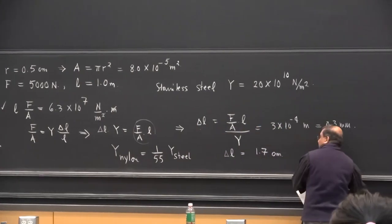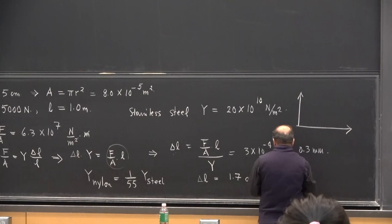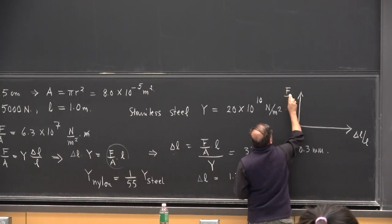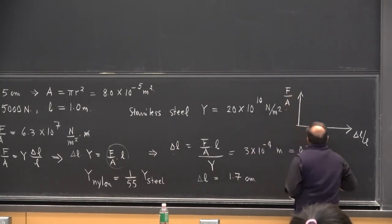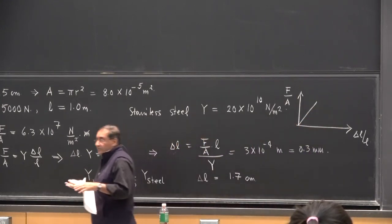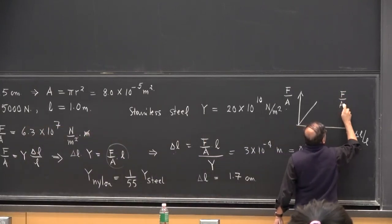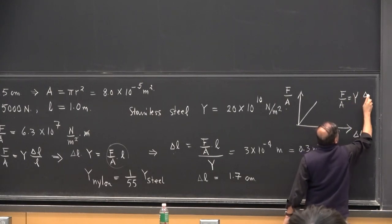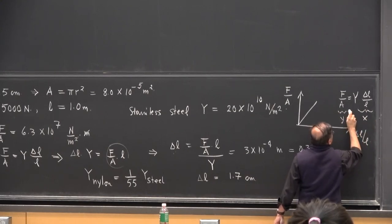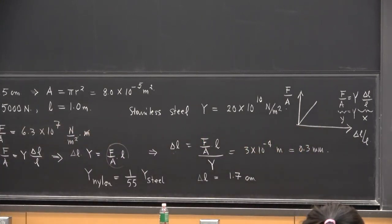These relations all have their regime of validity. If I were to plot stress and strain — this is the strain delta L over L, and this is the stress F over A — clearly because of the Young's modulus relation, you would expect a straight line, because the equation is F over A equals slope Y times delta L over L. So the slope is your Young's modulus.